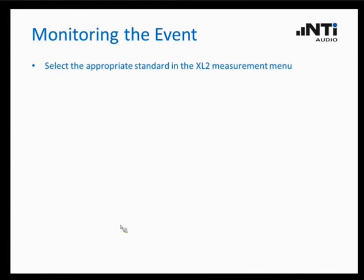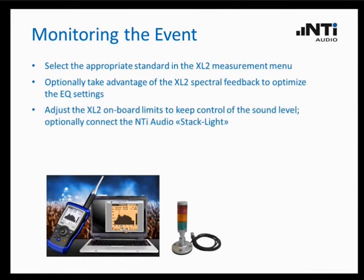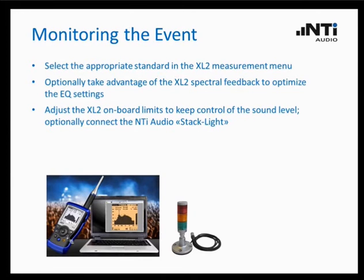These are the final steps to be done. You should select the appropriate standard in the XL2 measurement menu. You can take advantage of the spectrum feedback and spectrum display measurement of the XL2 if you want to optimize the equalization of your setup. You can also add a stack light to visualize the feedback from the XL2 — the XL2 LED gives three colors: green means the sound pressure level is clearly below the given limits, orange means it is coming close to the limits, and red means you are exceeding the limits and have to adjust the volume.